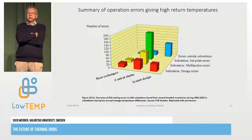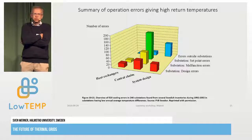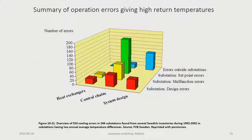This is an example of typical errors in substations that we identified 20 years ago. The two dimensions are whether errors are located in heat exchangers, control chains, or system design, and whether they are design errors, malfunction errors, or setpoint errors. Most of the errors appear in the control chain — politely put, there is significant improvement potential in control chains.